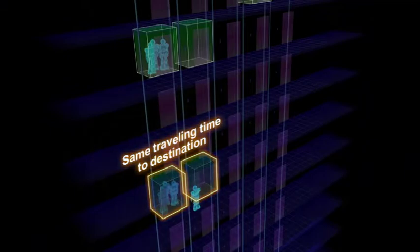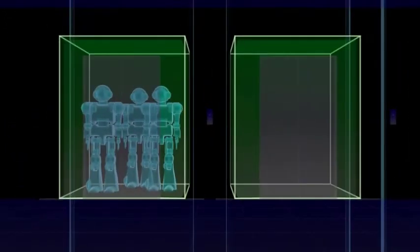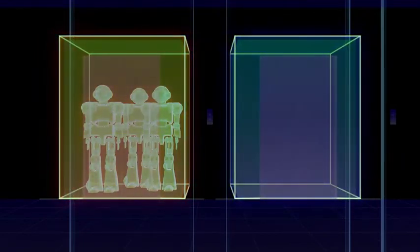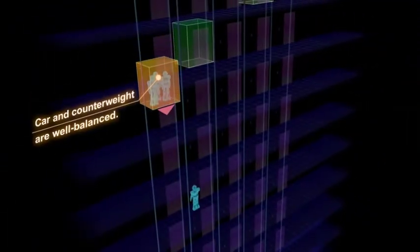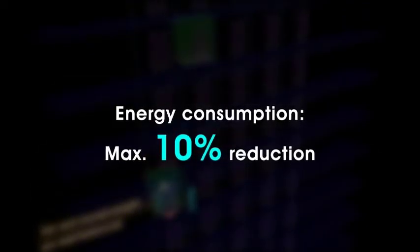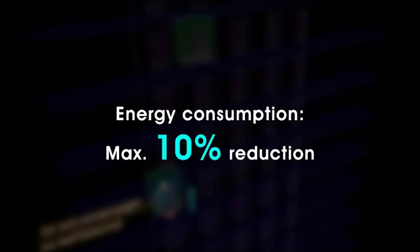If it takes almost the same time for these two cars to reach the target floor, this left car carrying passengers is assigned as the car is able to descend with less energy consumption. This function can reduce up to 10% in energy consumption without sacrificing passenger convenience.